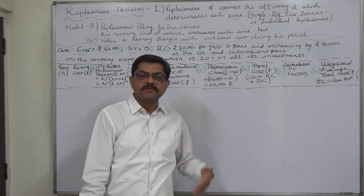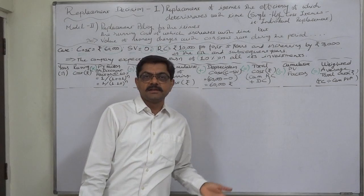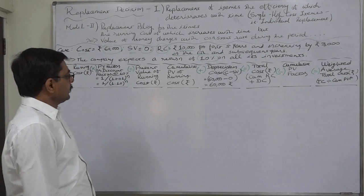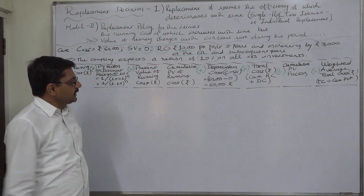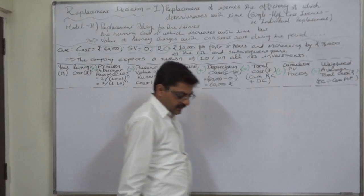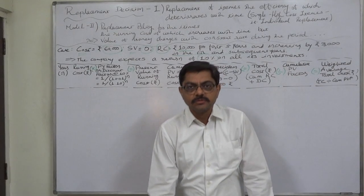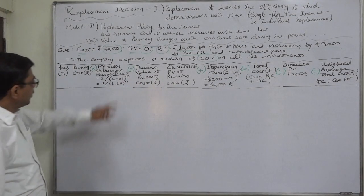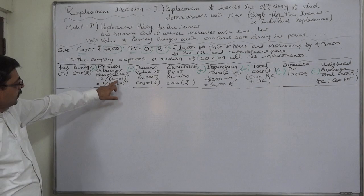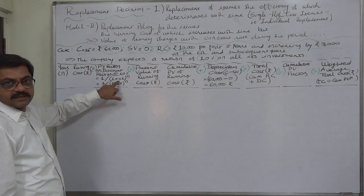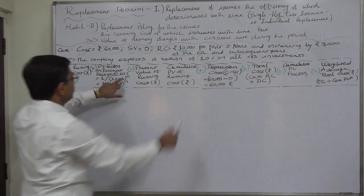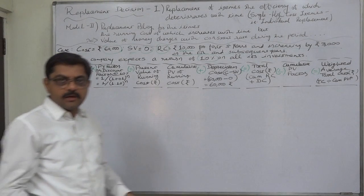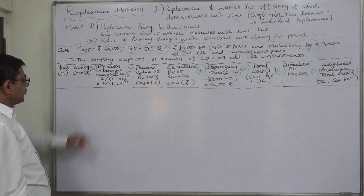So in the 6th year it will be 13,000; in the 7th year 16,000; in the 8th year 19,000, and so on. The company expects a return of 10% on all its investments. This rate should be used for calculation of the present value factor or discounting factor, which will be 1 divided by (1 + 0.1) raised to n years, as compounding is assumed to be on a yearly basis.